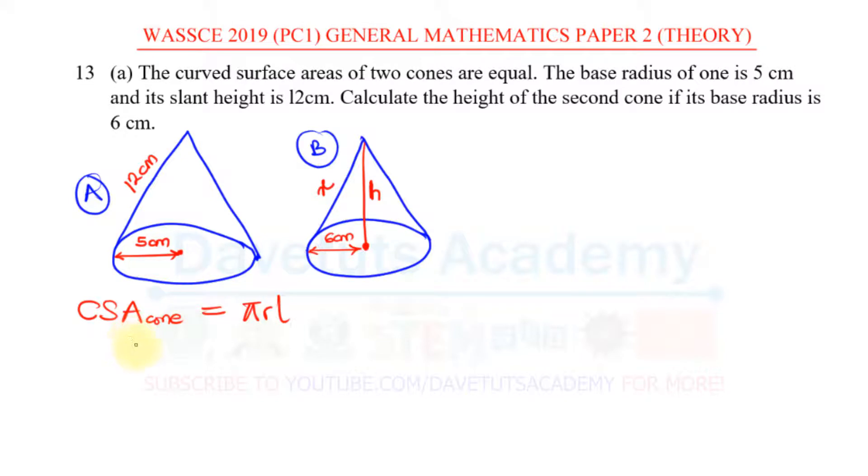For the A the curved surface area will be π times the radius which is 5 multiplied by the slant height that is 12. That is equal to for the second one π times the radius which is 6 and the slant height we don't know it we tagged as x. From here the πs can cancel each other so that we have 6x is equal to 5 times 12 that's 60 therefore x will be 60 over 6 and that will be 10 centimeters.